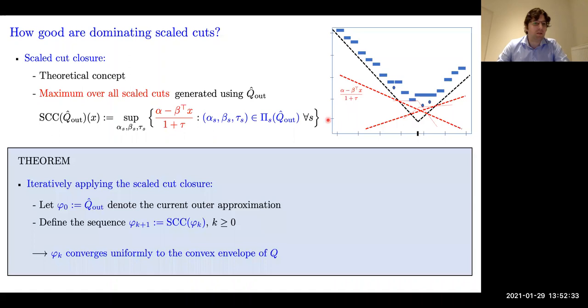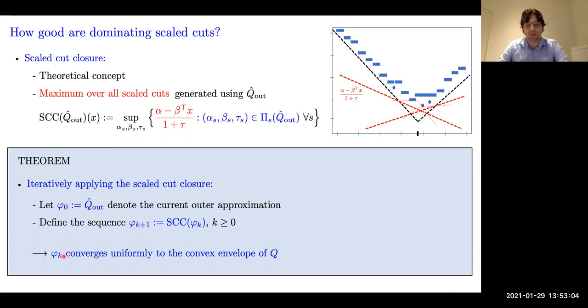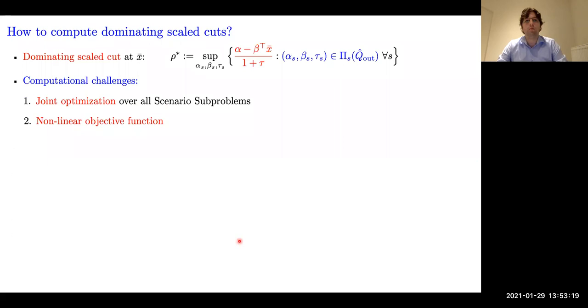I get to the main convergence theorem we could derive. If we iteratively apply this scaled cut closure—starting with the outer approximation phi_0, and defining the sequence phi_k by iteratively taking the scaled cut closure—then the sequence of functions converges uniformly to the convex envelope of q. In the end, they converge to the best convex polyhedral outer approximation we can get.